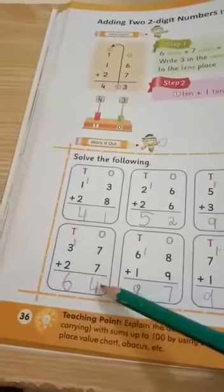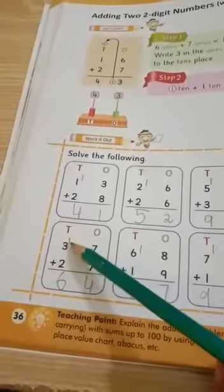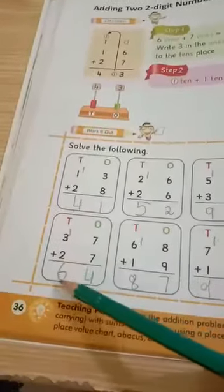7 plus 7, 14. 4 plus 1, 4 plus 1, 4 plus 2, 4 plus 2, 6.